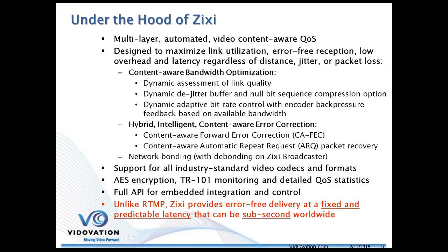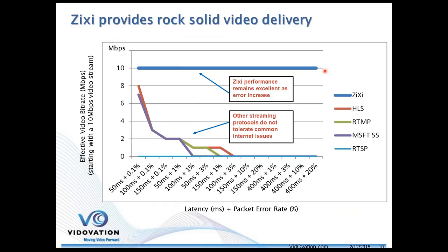At the beginning of a shoot or event, you set the latency or buffering to a couple hundred milliseconds, and it remains constant while Zixi manages everything behind the scenes — enabling sub-second distribution globally over the public, unmanaged internet. A key comparison slide shows a 100-meg stream in Zixi tolerating up to 400 milliseconds of latency with 20% packet loss, while other formats — HLS, RTMP, Microsoft, RTSP — quickly fall apart at just 0.1% packet loss and 100–150 milliseconds of latency. The Zixi protocol is rock solid.